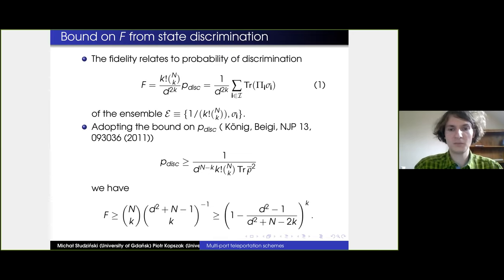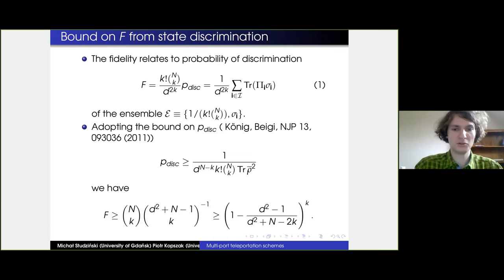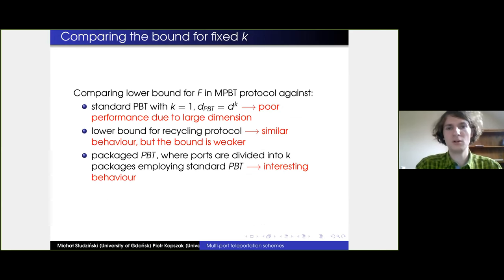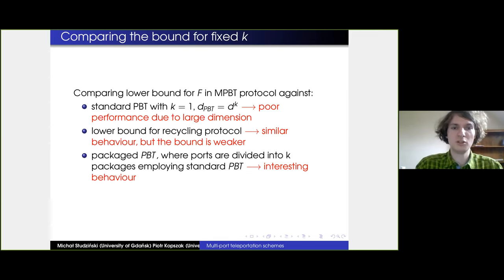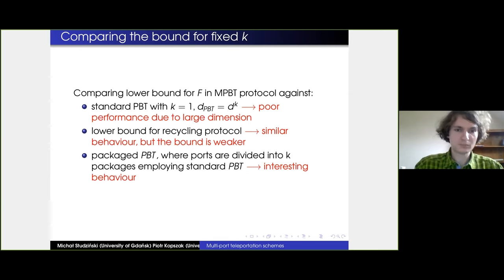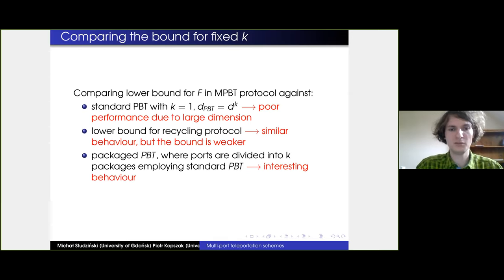To obtain the bounds one had to calculate the trace of ρ squared, which, while using elementary tools, was a non-trivial combinatorial problem. Having these bounds we can compare MPBT against pre-existing protocols. In the case of standard PBT employing high dimensionality to fit all the message in one port, the comparison is not interesting because fidelity suffers a lot from high dimensionality. The lower bound for the recycling protocol, provided only in the qubit case, behaves similarly to our bound but is always weaker.